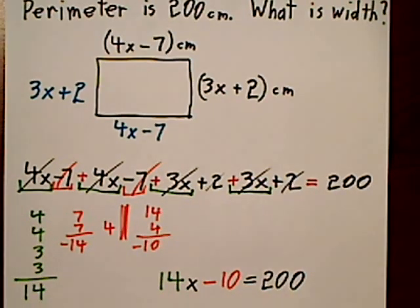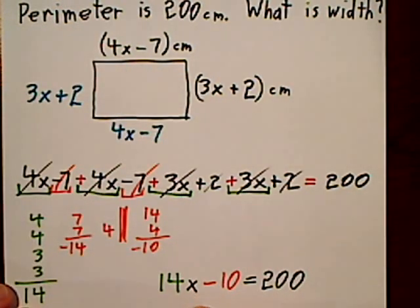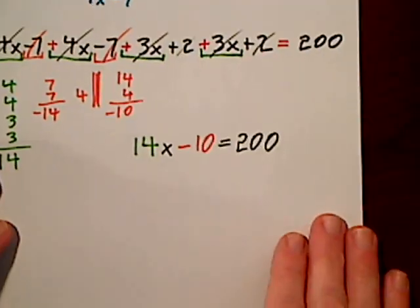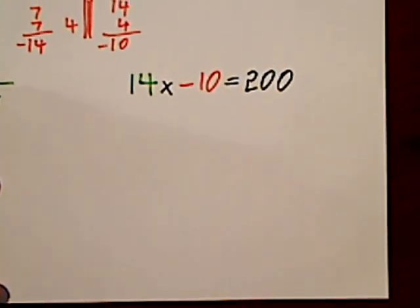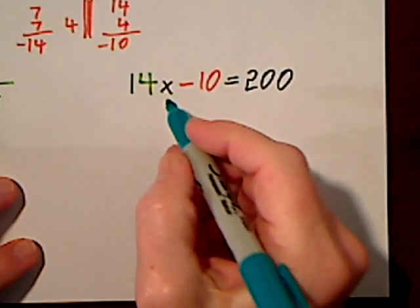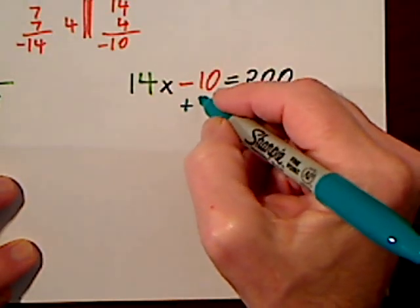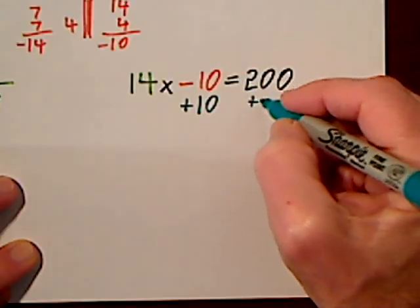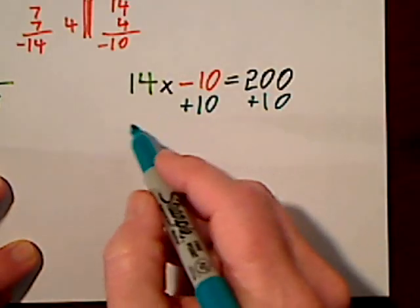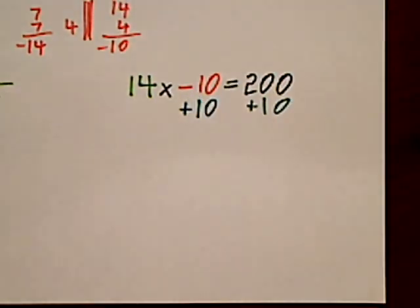And now we just have to solve for x. Well I shouldn't say just because after we solve for x, we'll have to plug it back in. We want x by itself. Get rid of this negative 10. It's held by addition or subtraction, so you get rid of it with addition or subtraction. I put a positive 10 underneath the negative 10, and then I always have to do the same thing on the other side.